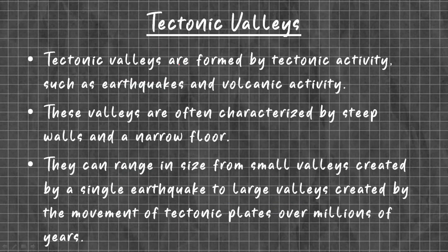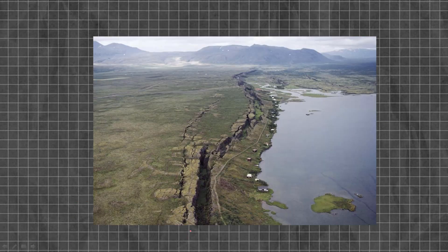Tectonic valleys are formed by tectonic activity such as earthquakes and volcanic activity. These valleys are often characterized by steep walls and narrow floors. They can range in size from small valleys created by a single earthquake to large valleys created by the movement of tectonic plates over millions of years. The valley created by movement of tectonic plates is a tectonic valley.